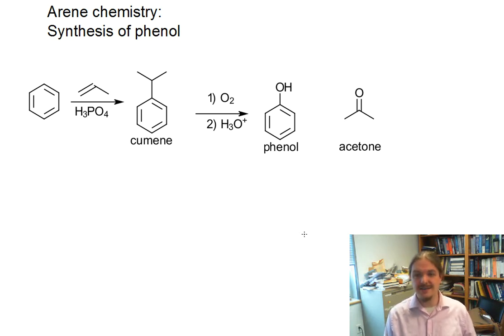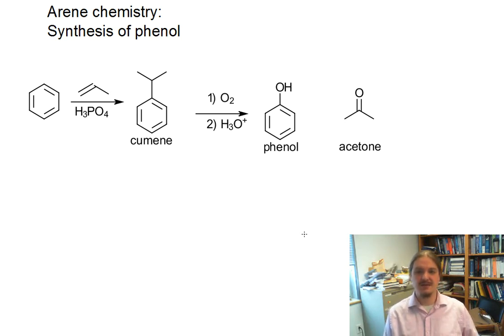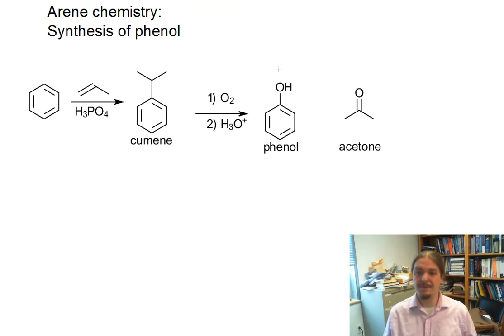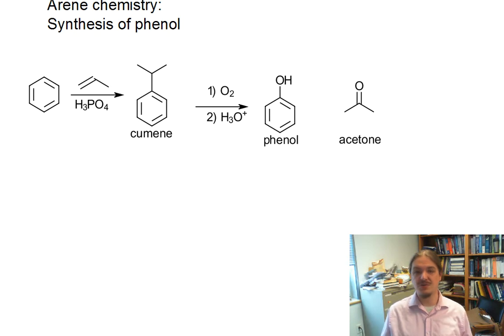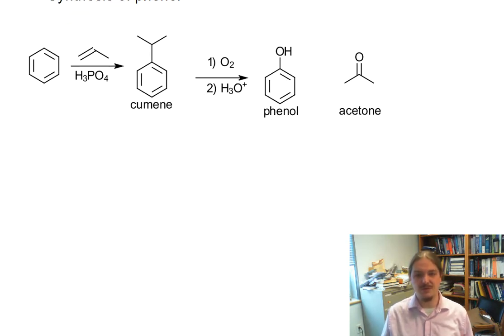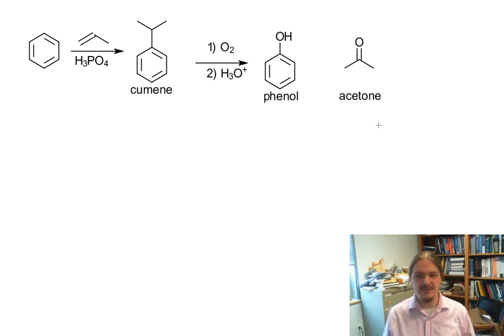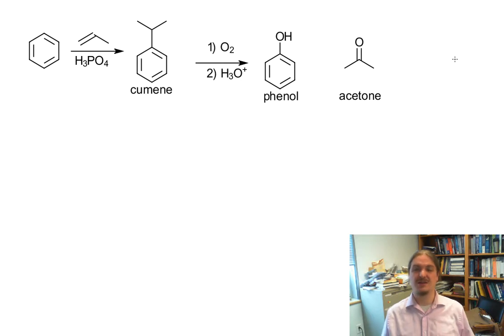Cumene is then oxidized by oxygen in air into a hydroperoxide, which is hydrolyzed using acidic water. Phenol is one of the products of that, but the major byproduct of that reaction is acetone. This turns out to be not just the commercial source of phenol, but also the commercial source of acetone. Eighty-some percent of the world's acetone is made by this process, and so the production and cost of acetone are actually tied to the production and cost of phenol.